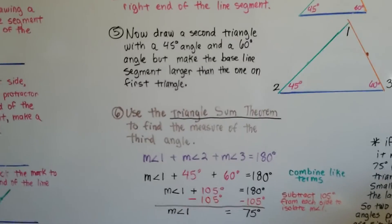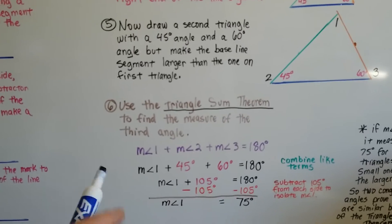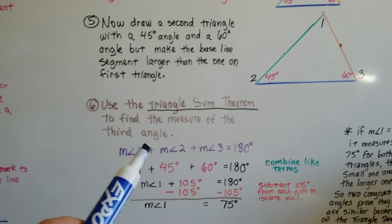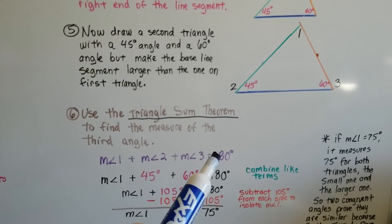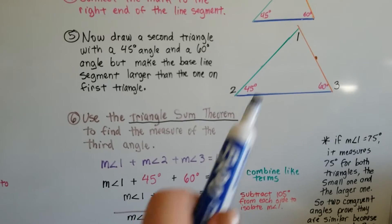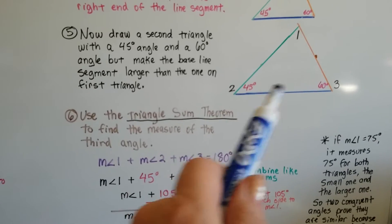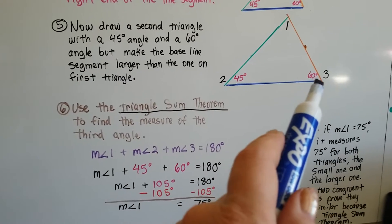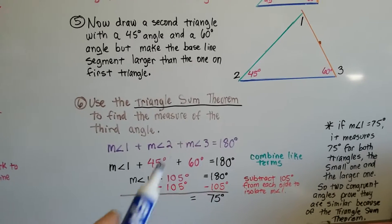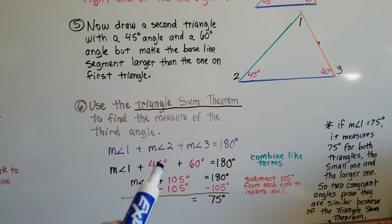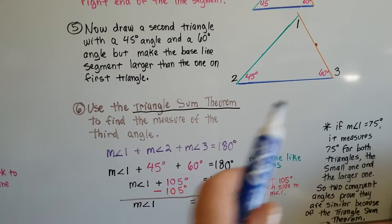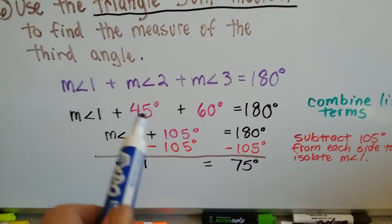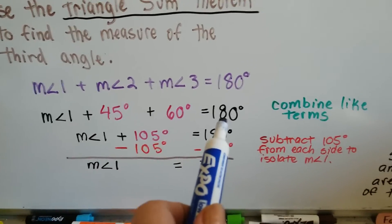We can use the triangle sum theorem to find the measure of the third angle. So, remember that from the last few videos? It's the measure of angle 1 plus the measure of angle 2 plus the measure of angle 3 is going to equal 180 degrees, because all the interior angles of a triangle equal 180 degrees. Well, if this is 45 and this is 60, we know that we can substitute 45 degrees for the measure of angle 2 and 60 degrees for the measure of angle 3, and we get the measure of angle 1 plus 45 degrees plus 60 degrees equals 180 degrees.